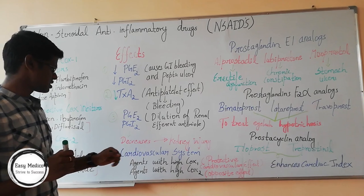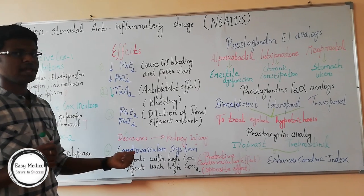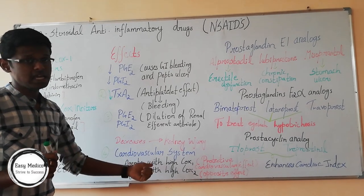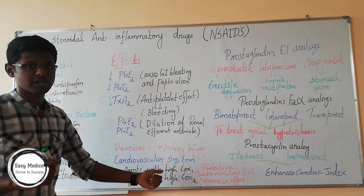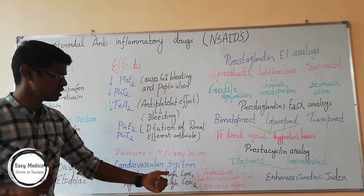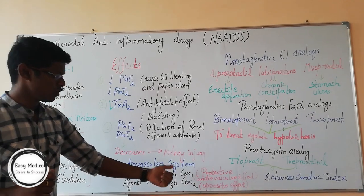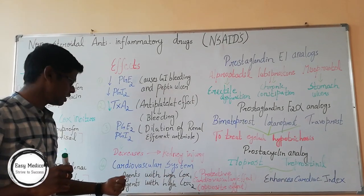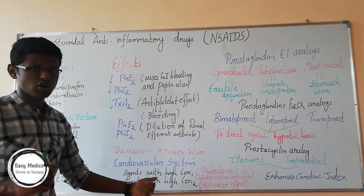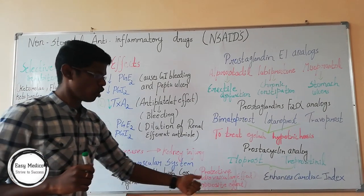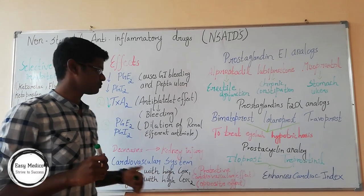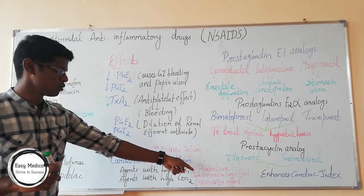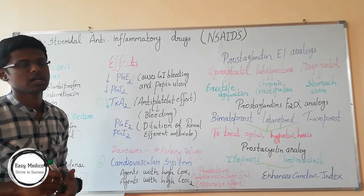In the cardiovascular system, agents with high COX-1 inhibition have a protective cardiovascular effect, while agents with high COX-2 inhibition have the opposite effect — that is, a negative cardiovascular effect.